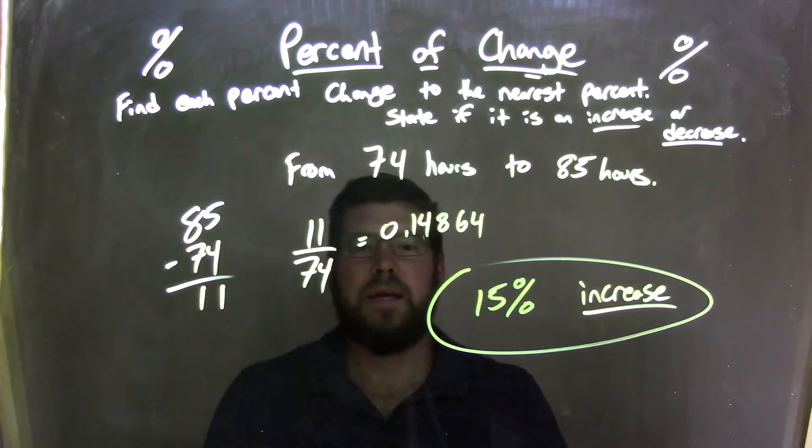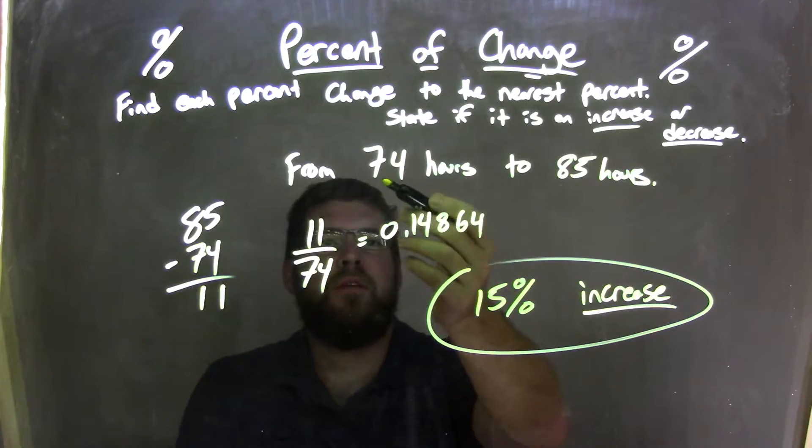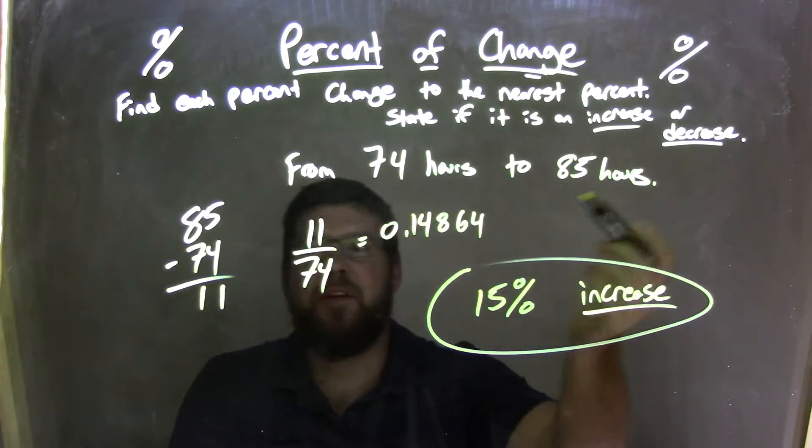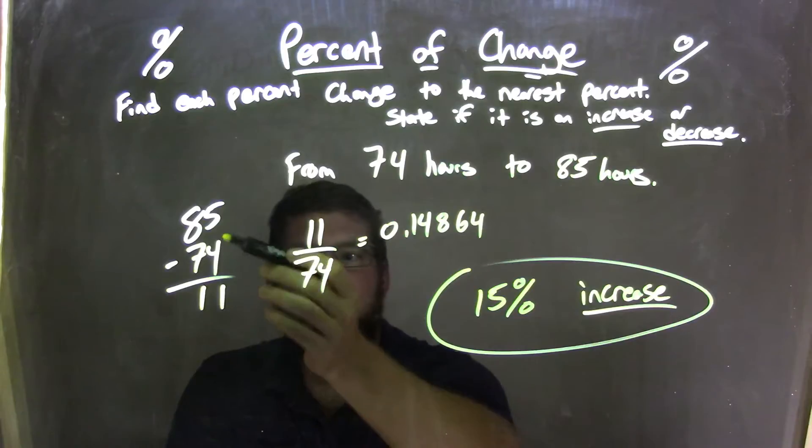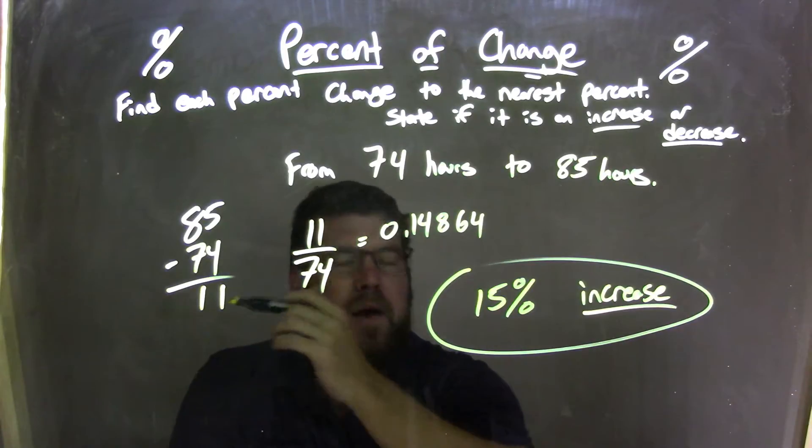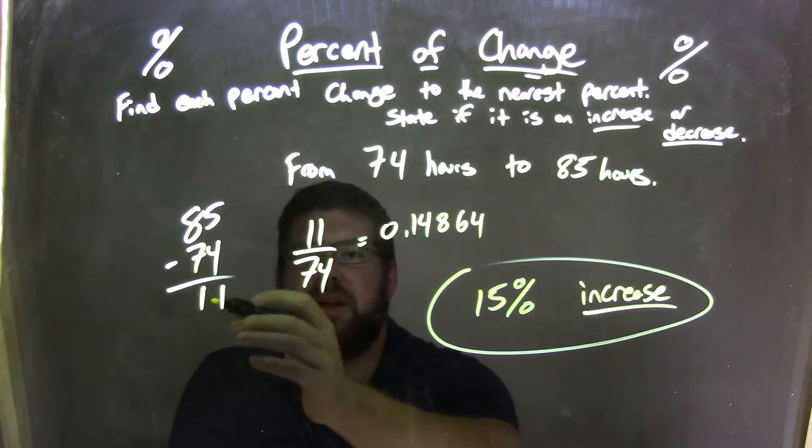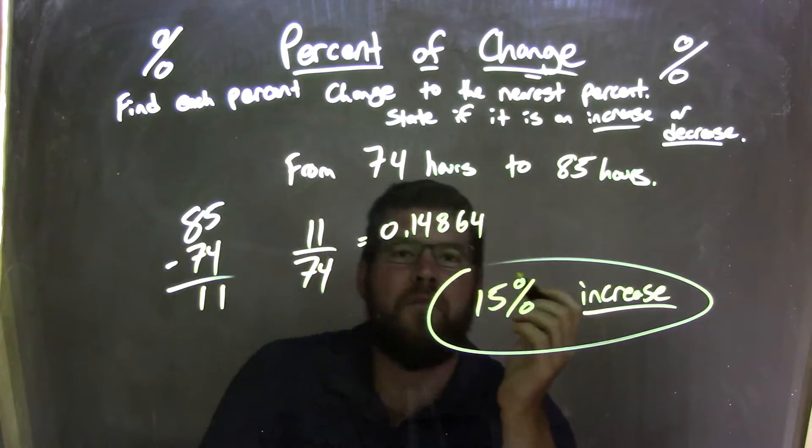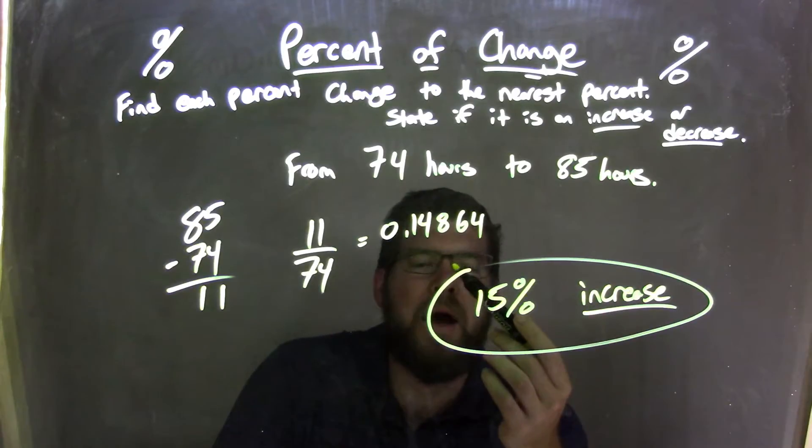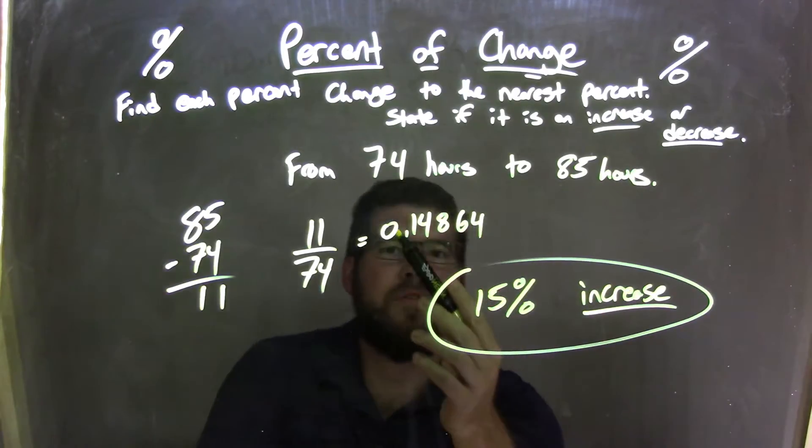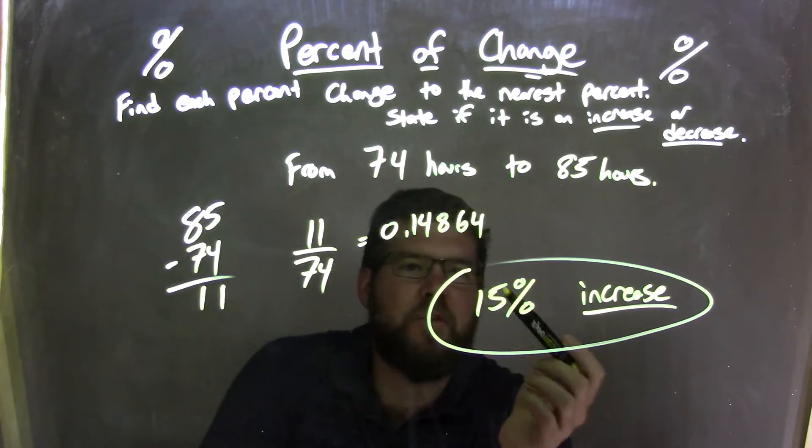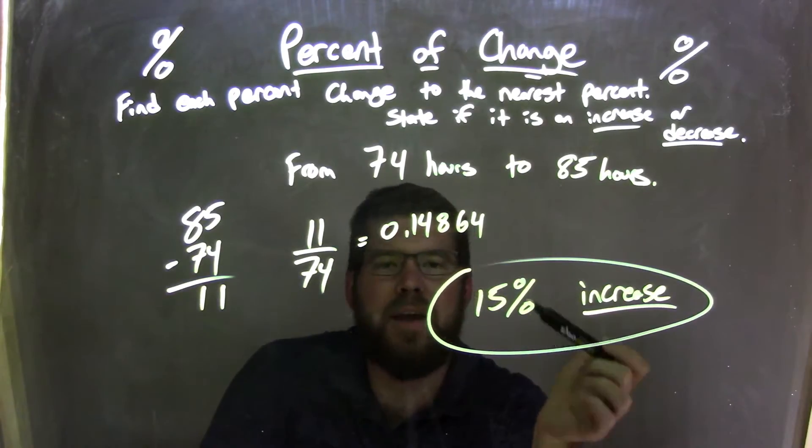Let's recap here. We started from our problem, 74 hours to 85 hours. We knew there was an increase, and we had to find the difference between them. 85 minus 74 is 11. 11 over 74, we divide by our first number, came out to 0.14864. We had to round that to the nearest percent. The first two digits is the percent. That 8 pushed that 4 up, because it's greater than 5, to 15. So, we have a 15 percent increase.